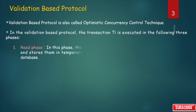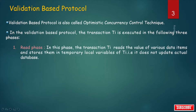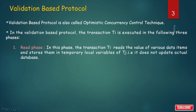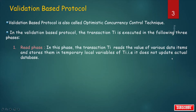The first phase is the read phase. In this phase, say there is one transaction TI. That transaction reads the value of various data items and stores them in a temporary local variable of TI, that is, a temporary local buffer. So it does not update the actual database.